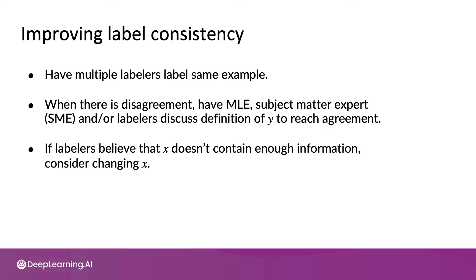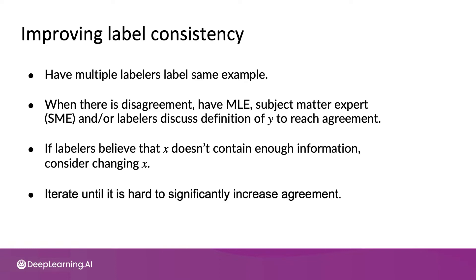During this discussion, in some cases the labelers will come back and say they don't think the input x has enough information. If that's the case, consider changing the input x. For example, when we saw pictures of phones that were so dark that we couldn't even tell what was going on, that was a sign that we should consider increasing the illumination — the lighting with which the pictures were taken. I know this isn't always possible, but sometimes this can be a big help. And all of this is an iterative process.